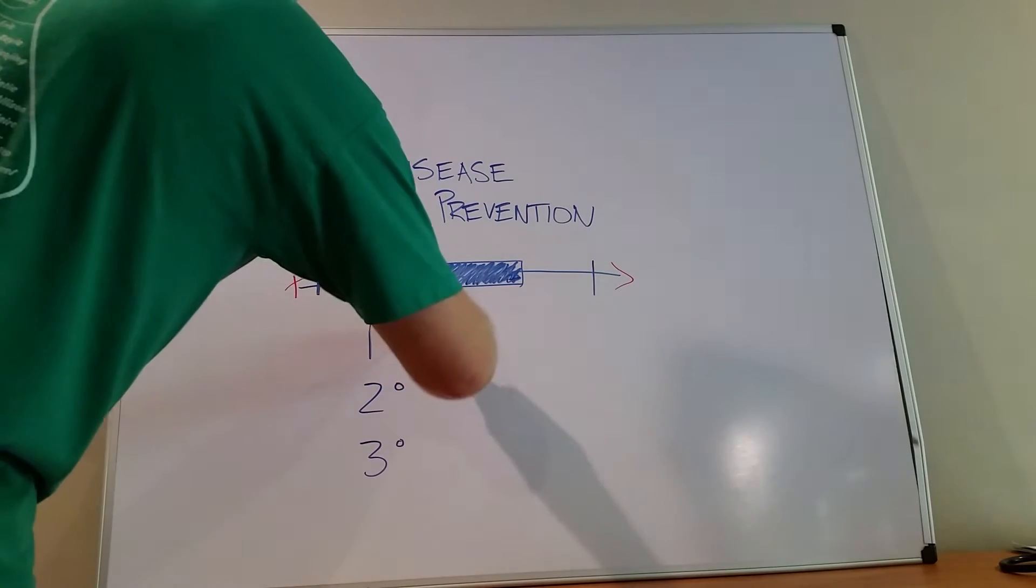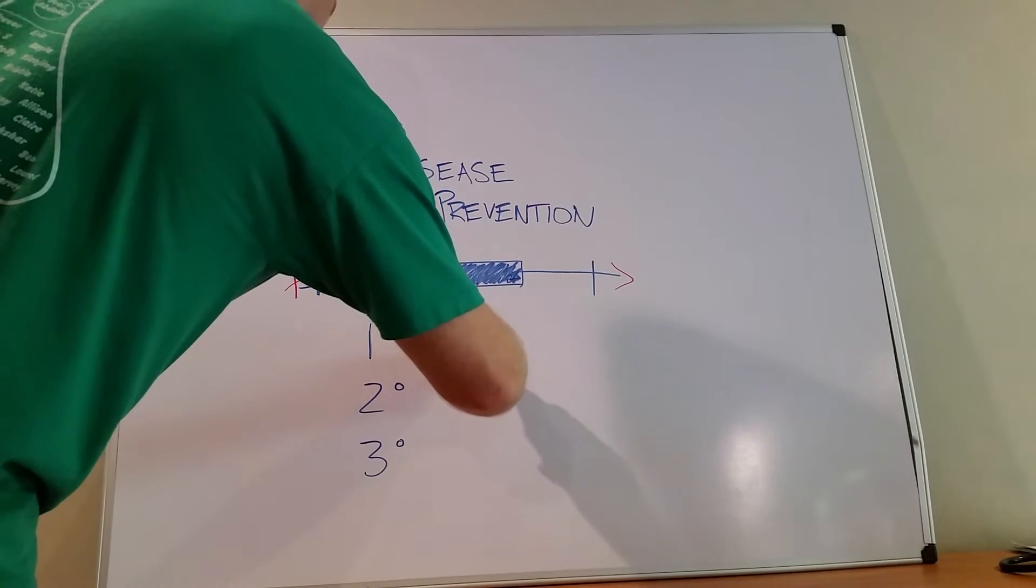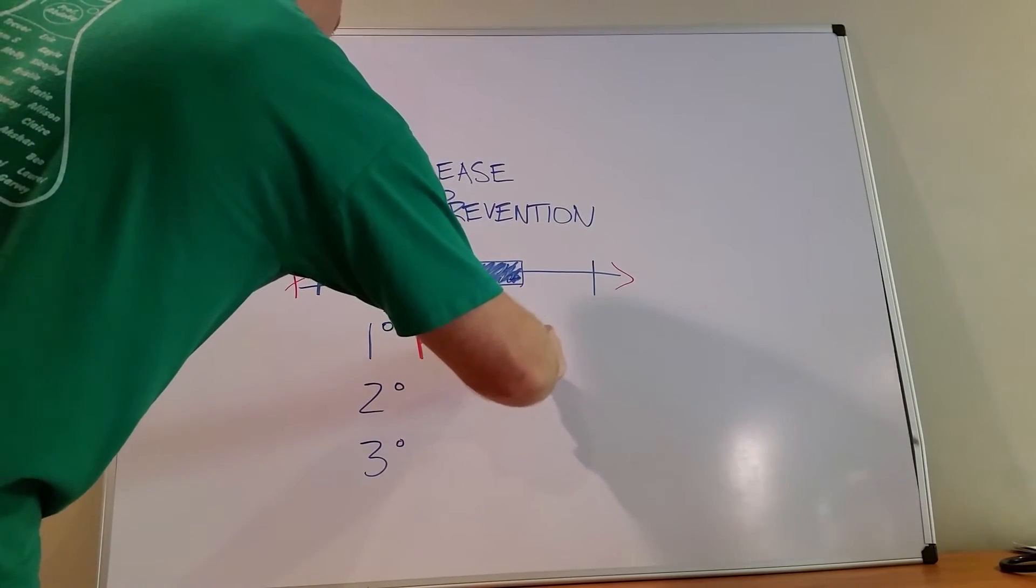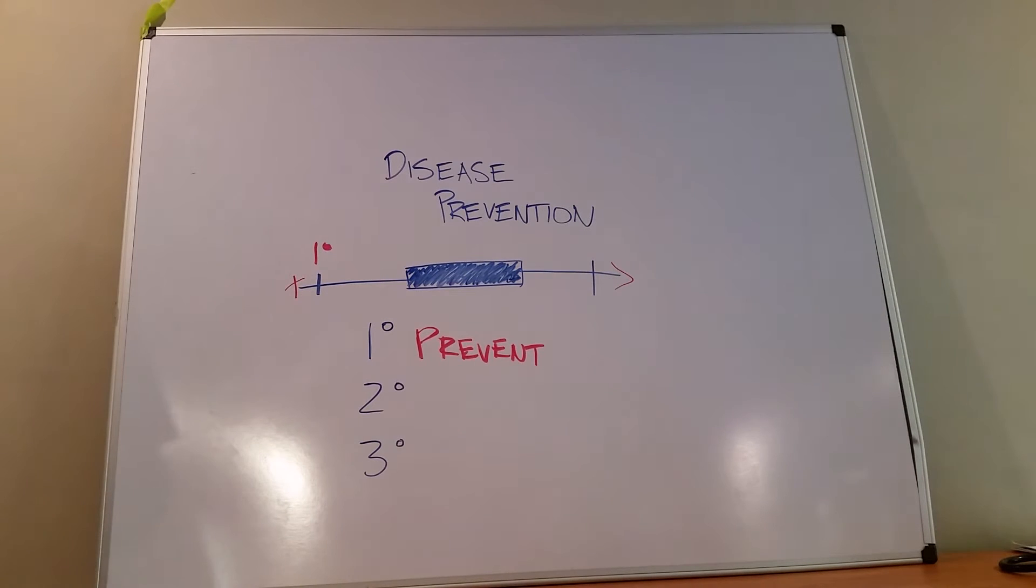Prevent, or P, is the big thing for primary. We try to make the disease never happen in the first place.